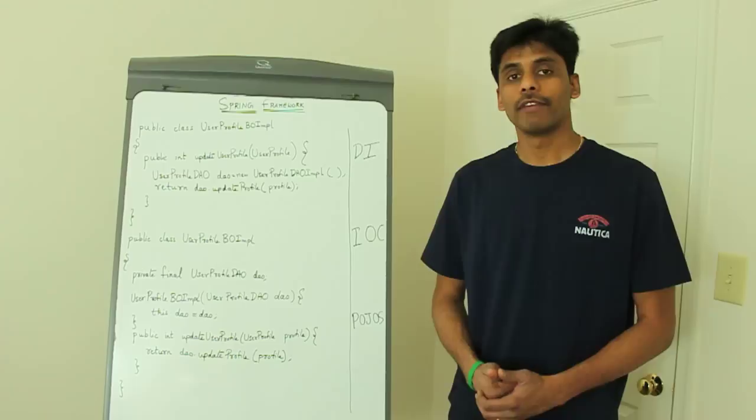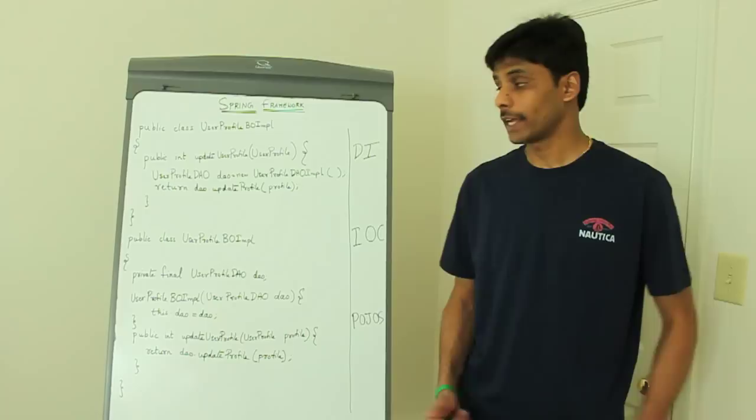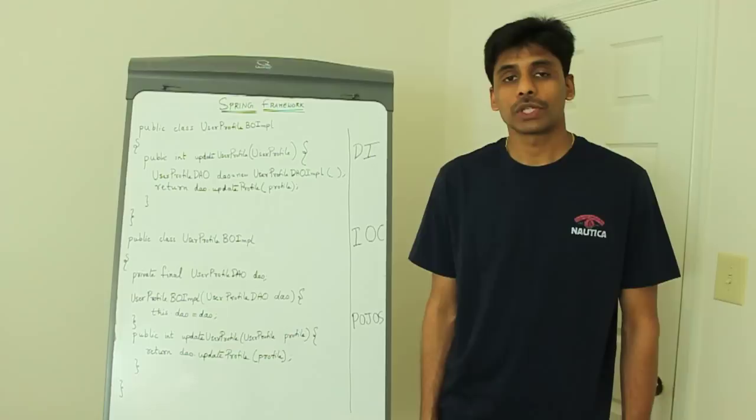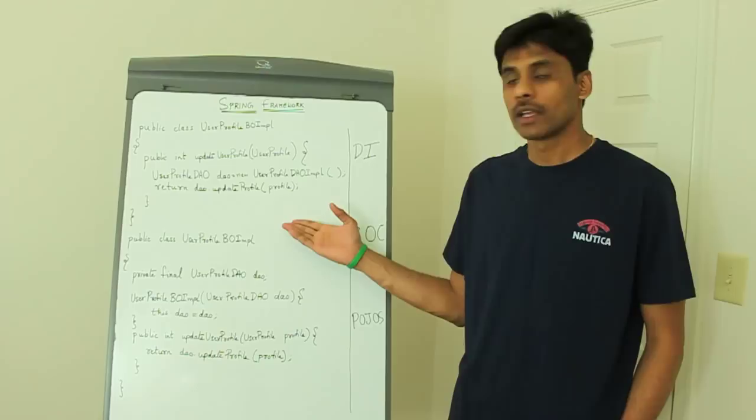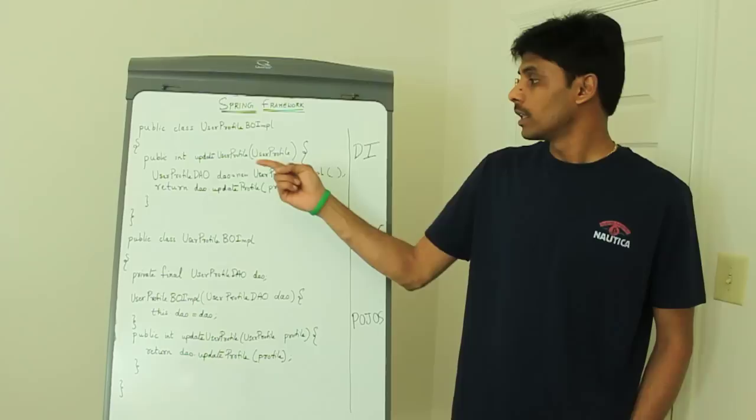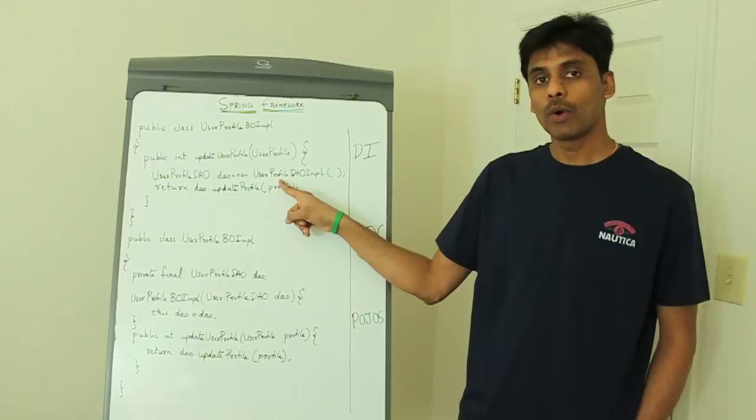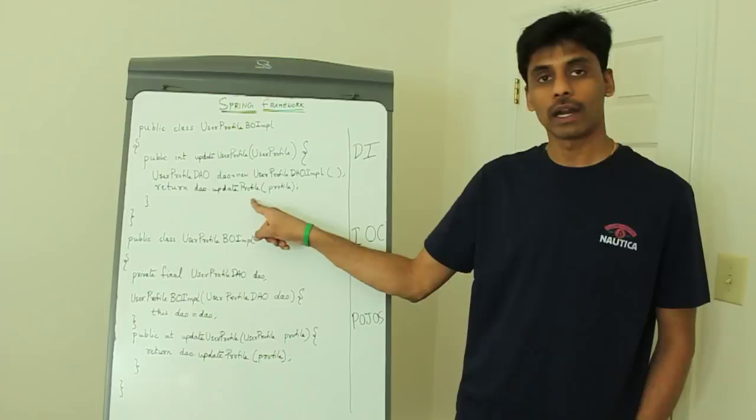Spring is a dependency injection mechanism that includes the various application classes across the J2EE tiers or layers together. For example, let's say we are developing a social networking website application that will replace Facebook. And let's say we are working on the update user profile module. Here is our business layer class which uses the data access layer class to update the user profile information. As you can see, the business layer class's update user profile method creates an instance of the DAO class which does the database update for us, and then it calls the update profile on the DAO method.